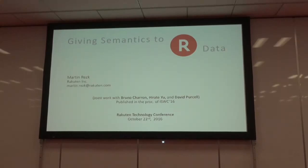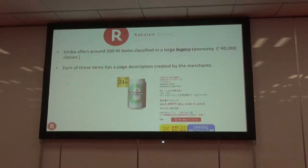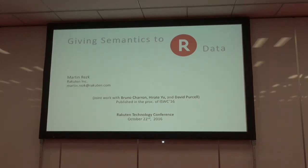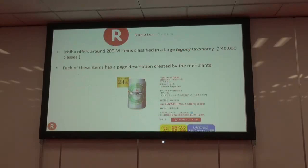In our case at Rakuten, we go a bit deeper into the semantics. This is joint work with Bruno Charron and David Hirate. Rakuten Ichiba offers around 200 million items classified under a very large taxonomy of about 40,000 classes. Each item has a page description, and if a user wants to find specific information they have to go through that text and find it themselves.